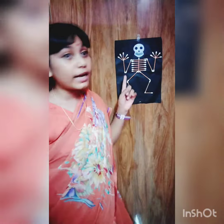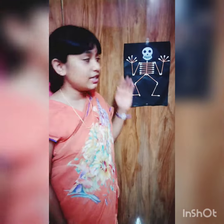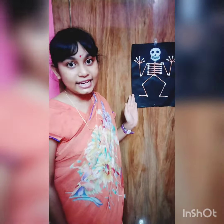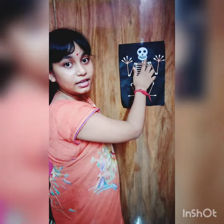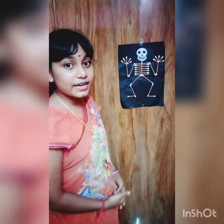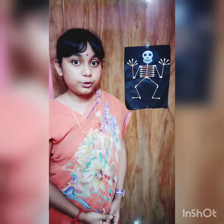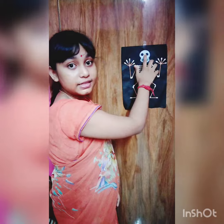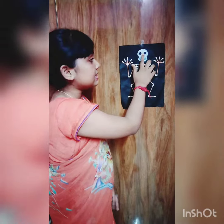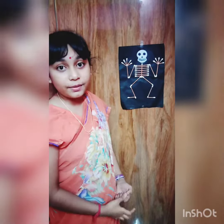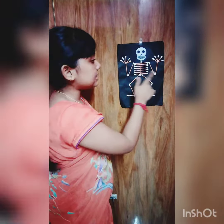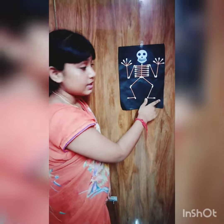Look at the picture. This is the structure of the skeleton. This is the skull. The skull is made up of 22 bones. This is the upper skull, and this is the cranium or the brain box.